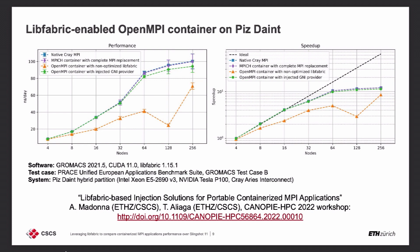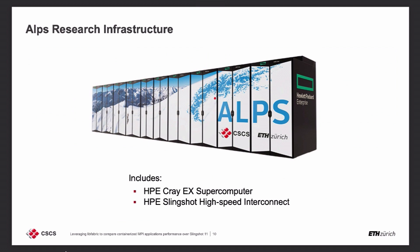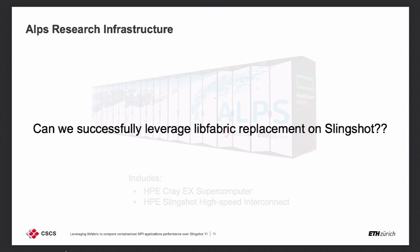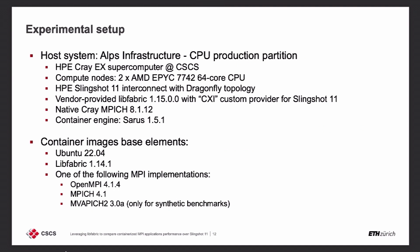What's the future for CSCS? As you've heard over the past couple of days, the future of CSCS is the ALPS research infrastructure, characterized by an HPE Cray EX supercomputer and an HPE Slingshot high-speed interconnect. Piz Daint has Aries, the previous-generation Cray interconnect, and ALPS features the brand-new HPE Slingshot. The question now becomes: can we leverage libfabric replacement on Slingshot?